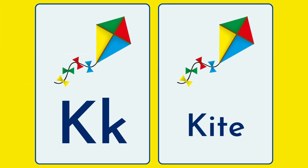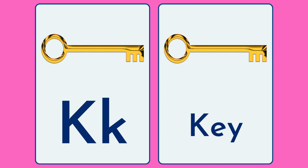Let's start with letter K. K K — kite. Come on children, say with me: K K kite. Next: K K — kiwi. Say with me children: K K kiwi.